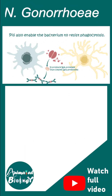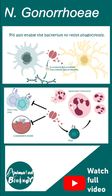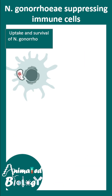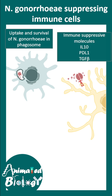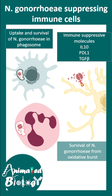The pili also enable the bacterium to resist phagocytosis. It can modify the immune response by preventing the complement system and Th1 and Th2 subtypes of T-cells from acting on it. It resists phagocytosis, can secrete immunosuppressive molecules, and can actually survive the harsh oxidative burst inside neutrophils or phagocytes.